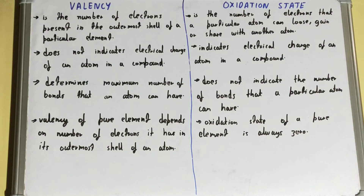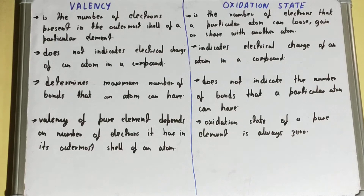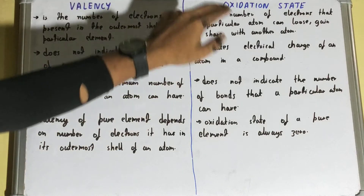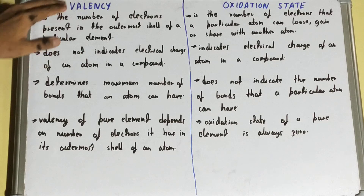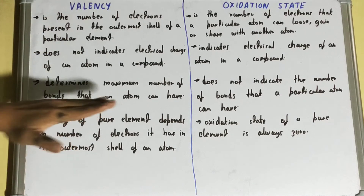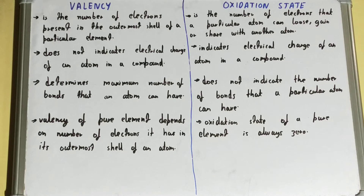Next, valency does not indicate the electrical charge of an atom in a compound, whereas oxidation state does indicate the electrical charge of an atom in a compound.